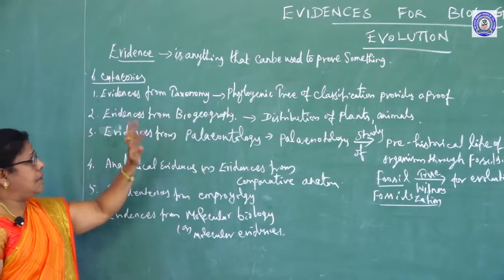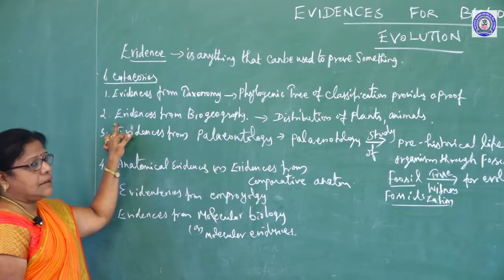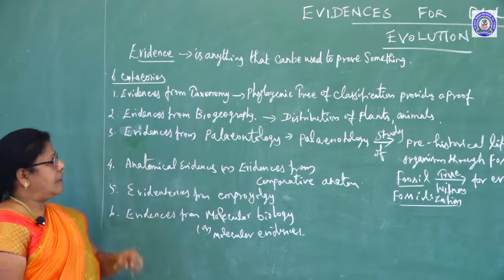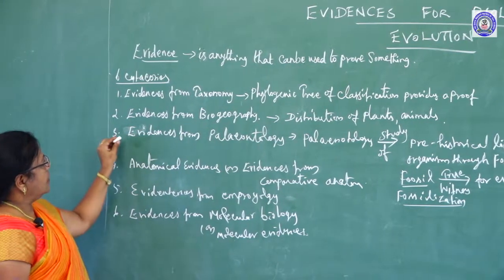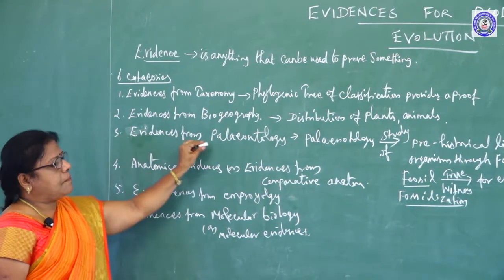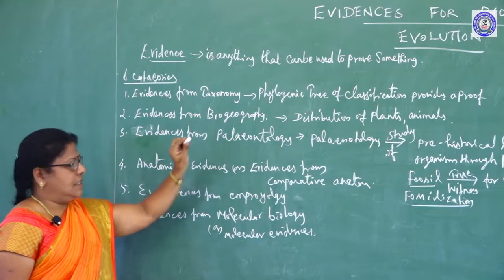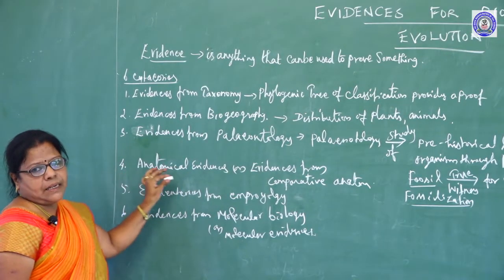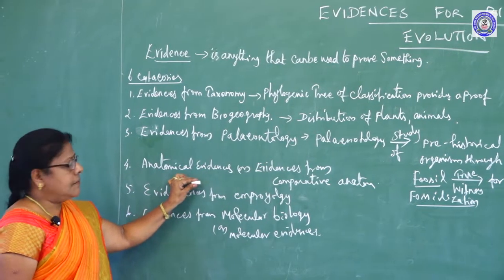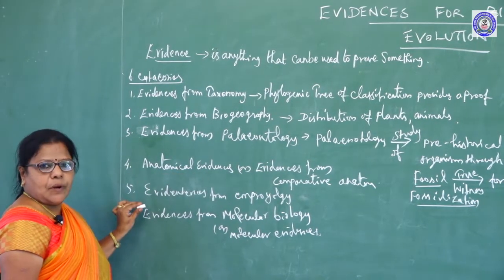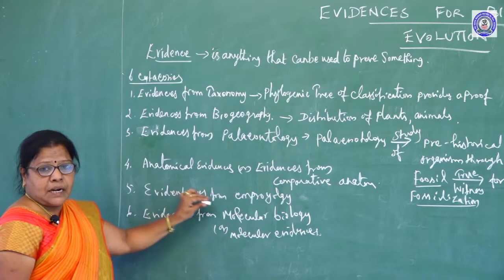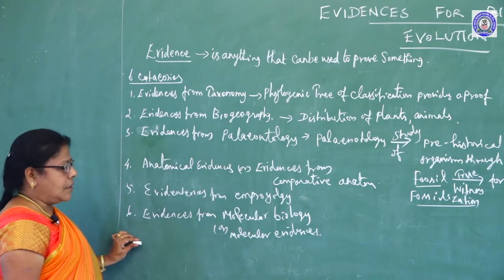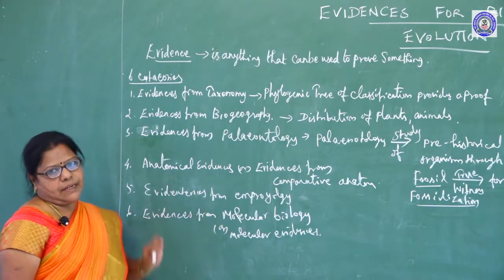First one: evidences from taxonomy. Second: evidences from biogeography. Third: evidences from paleontology. Fourth one: anatomical evidences. Fifth one: embryological evidences. And sixth one: molecular evidences.